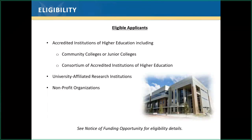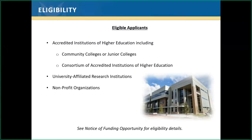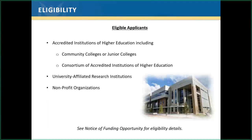My name is Chevis Graham and I'll be focusing on eligibility, the award period, and matching share. Eligible applicants for the EDA University Center award consist of accredited institutions of higher education, including both community and junior colleges; a consortium of accredited institutions of higher education where one institution must be the lead applicant with primary responsibility to EDA; university-affiliated research institutions; and non-profit organizations. These groups must demonstrate full support in writing from the university president or chancellor.